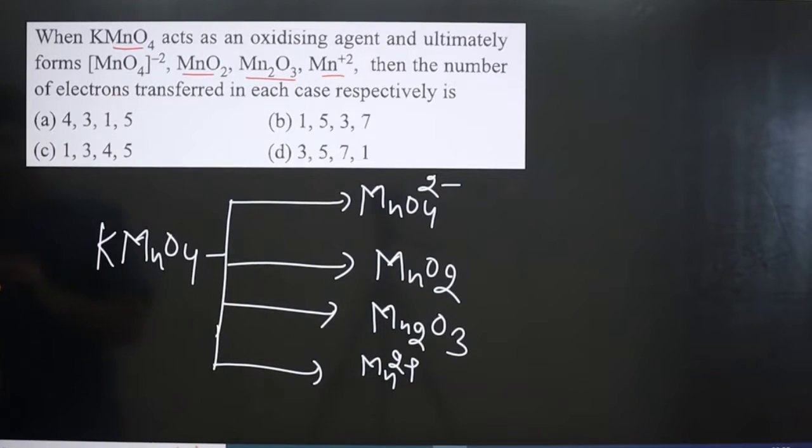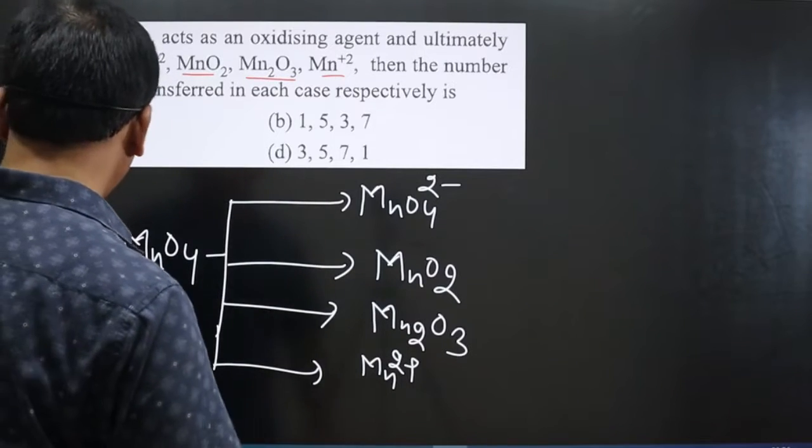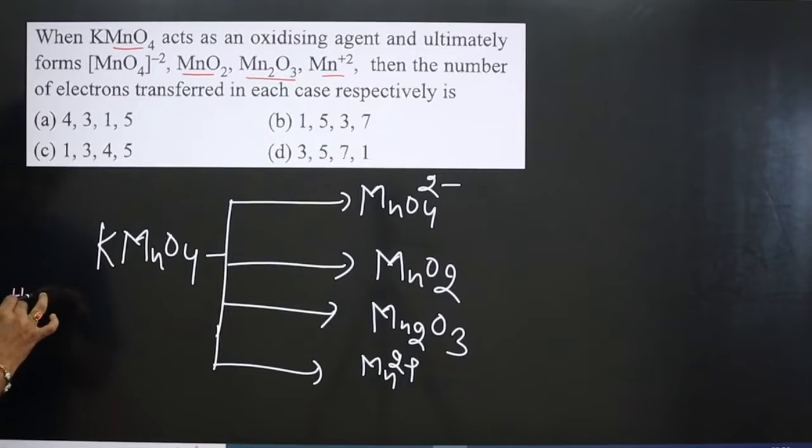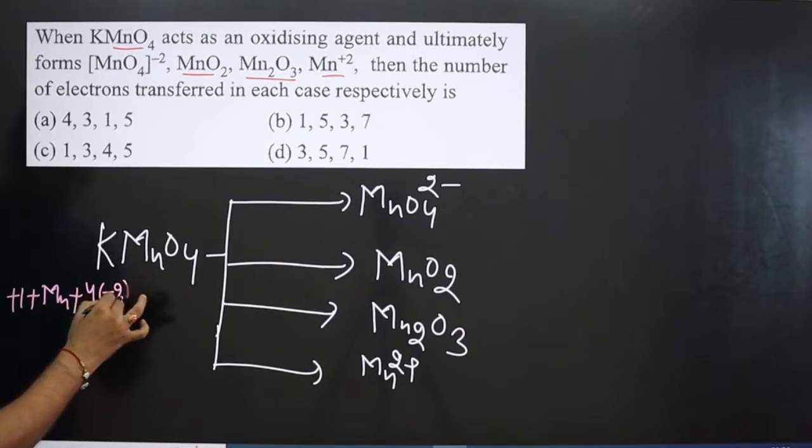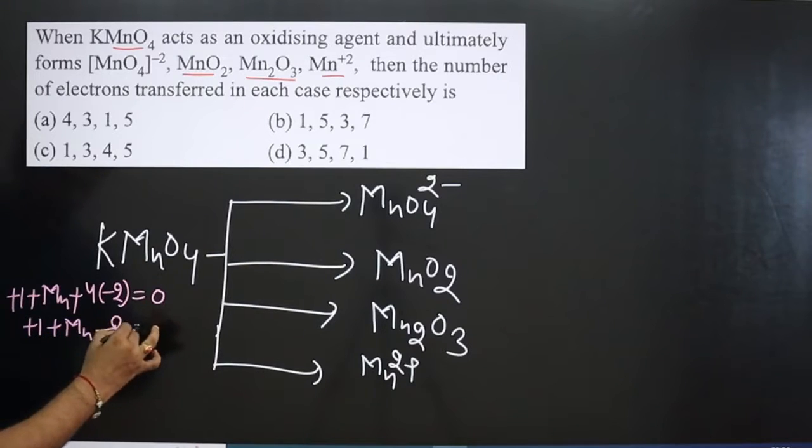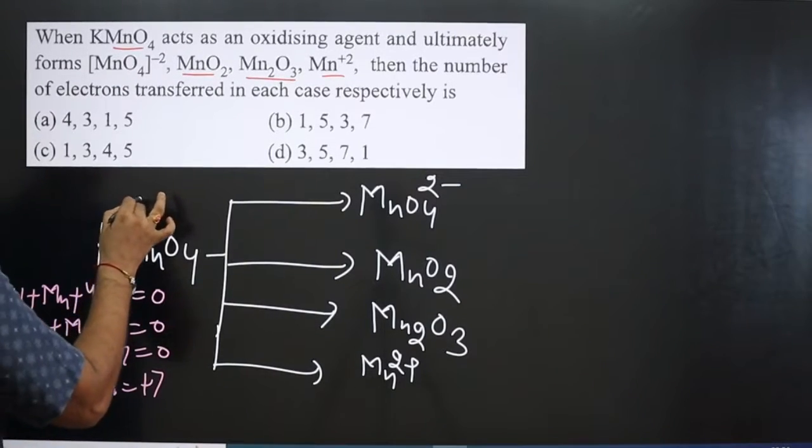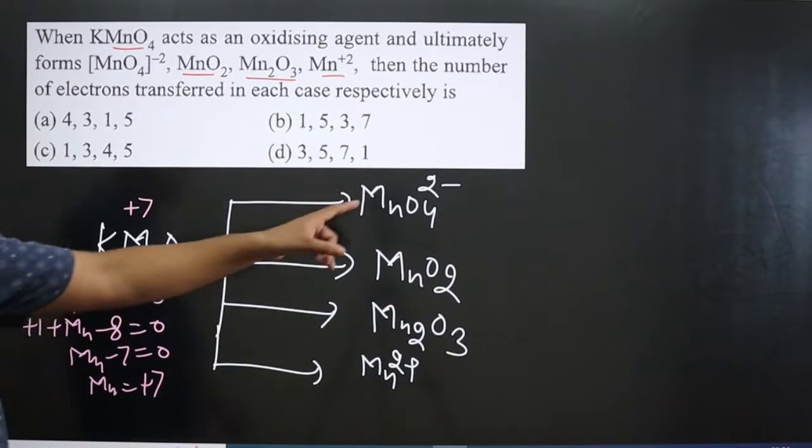Pay attention very carefully. We have potassium permanganate. In this case we can calculate the oxidation number. Potassium is a first group element, it will always show +1 oxidation number. Then we have manganese and oxygen. Each oxygen is -2 and it is a neutral compound equal to 0. We have +1 + Mn + 4(-2) = 0. Then we get Mn - 7 = 0, then Mn = +7. So Mn is present in +7 oxidation number.